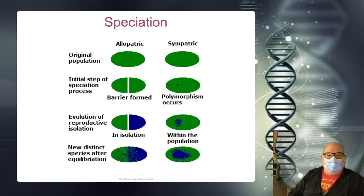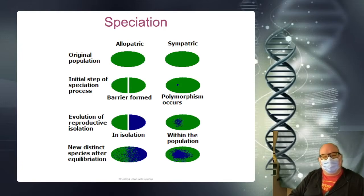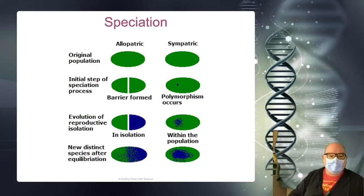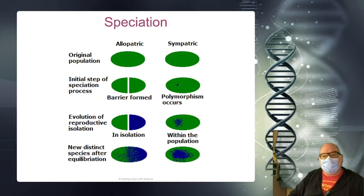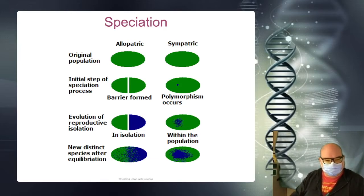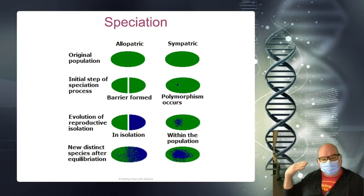Here's a little graphic that demonstrates this. Both of them start off as just one little green circle, and then in allopatric, we have a barrier. In sympatric, we have polymorphism — there's a new form of the species. What happens here is we see a totally new species evolve on both sides down here on the third row. And within the population we see a sort of subspecies — technically two distinct species.